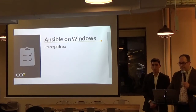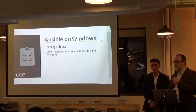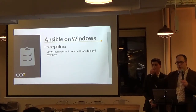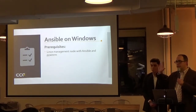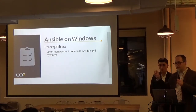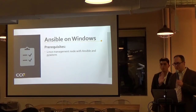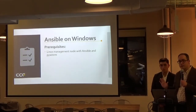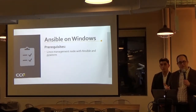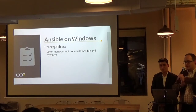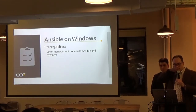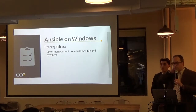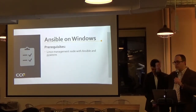So what do you need to run Ansible on Windows? You need a Linux management node — you can't run Ansible directly on Windows. They're bringing Bash to Windows with the Linux subsystem, but it's not officially supported by Ansible yet, so you still need a Linux machine. You can just spin up a VM — no big deal. On that node you need Ansible installed and PyWinRM, which is the Python library for using Windows remotely. That's how Ansible talks to Windows machines — through WinRM.